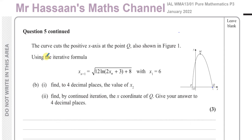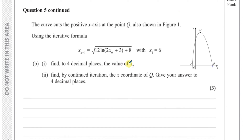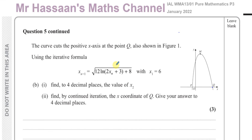Part B, part 1: using the iterative formula x_{n+1} equals the square root of 12 times ln(2x_n + 3) plus 8, with x_1 equals 6 — this formula has been derived by rearranging the original equation. Find to 4 decimal places the value of x_2.